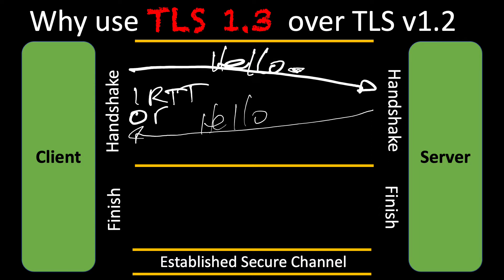In some instances, we can also do zero RTT — zero round trip — in version 1.3, and this is during session resumption. This is for a session that's already been established, where the client says 'do you still remember me?' The disadvantage is you can have replay attacks with a man-in-the-middle. It can grab that client info and pretend to be the client and take over that conversation with the server. So zero round trip with session resumption is good from a performance perspective, but not necessarily from a security perspective.